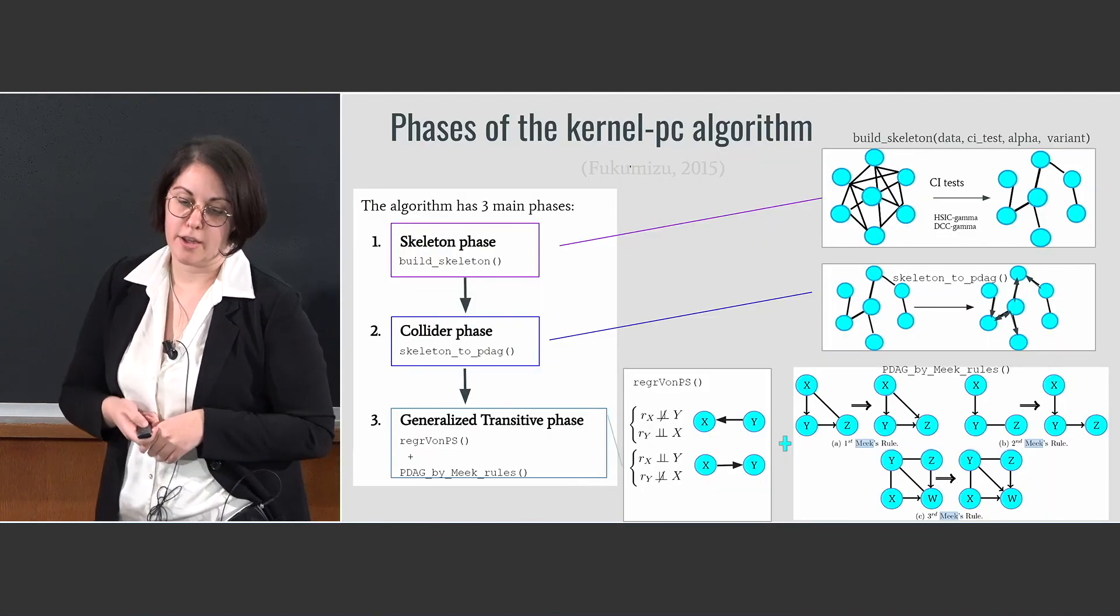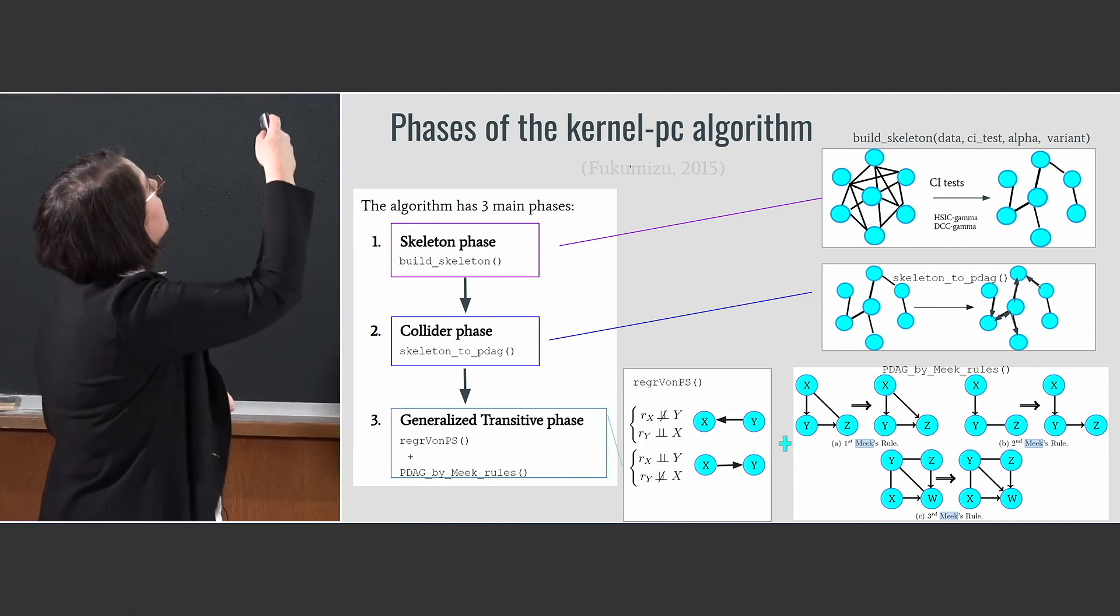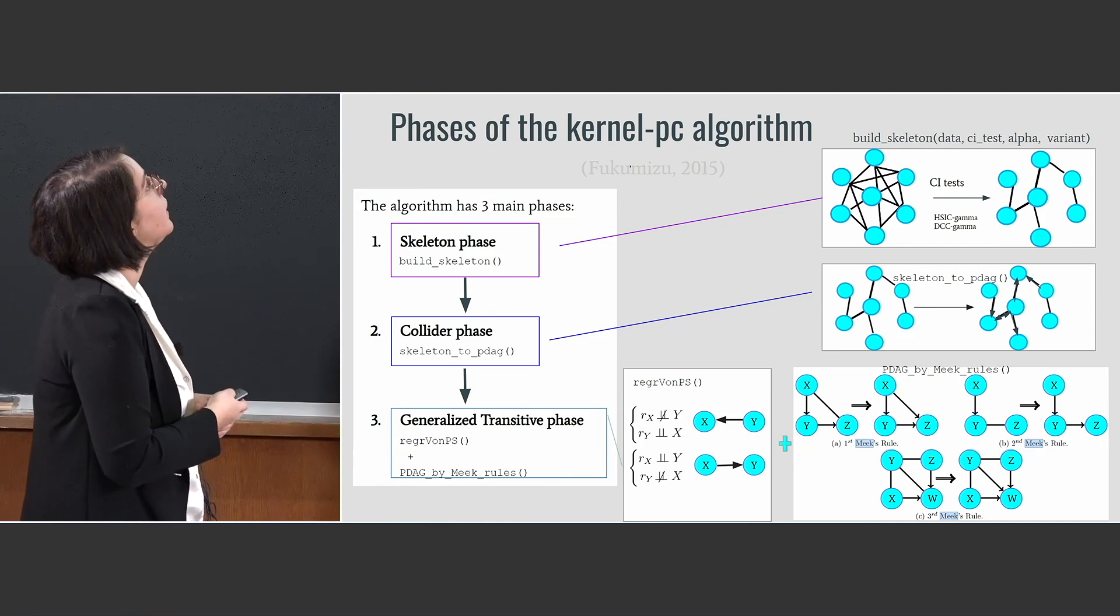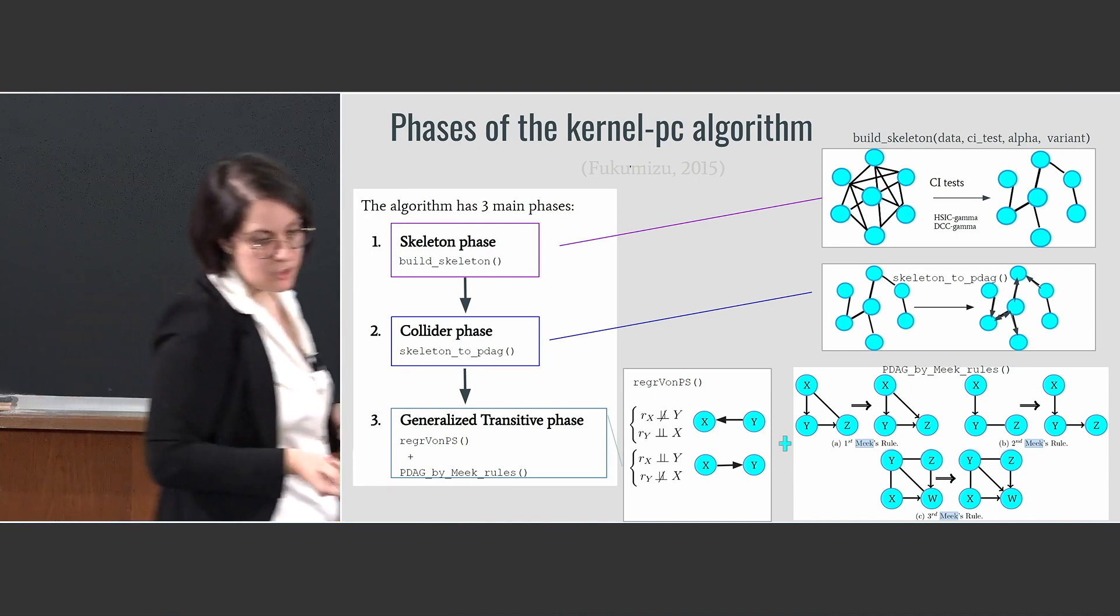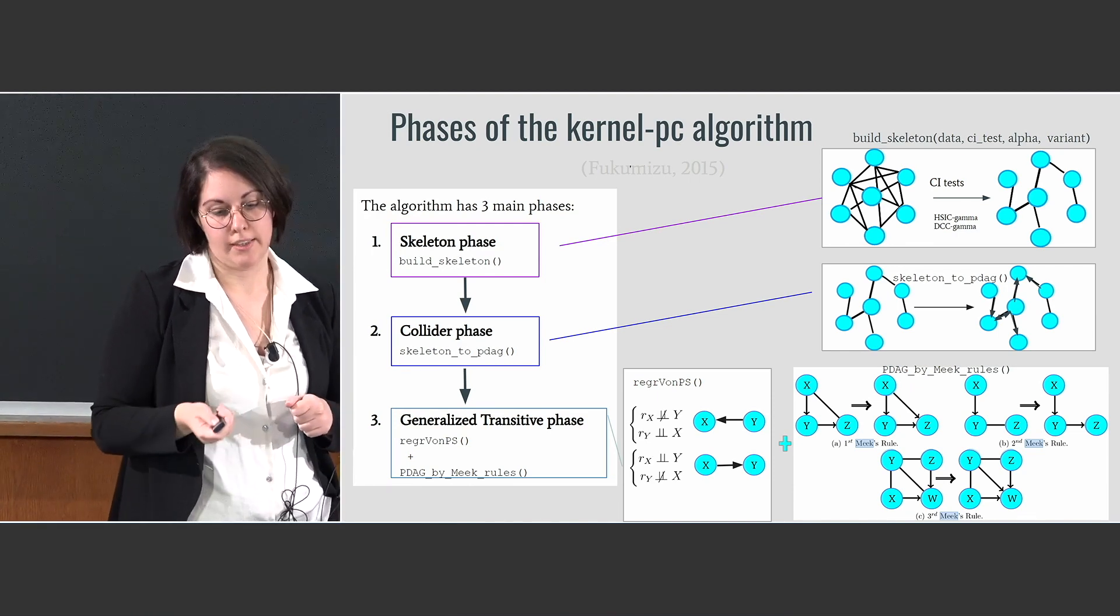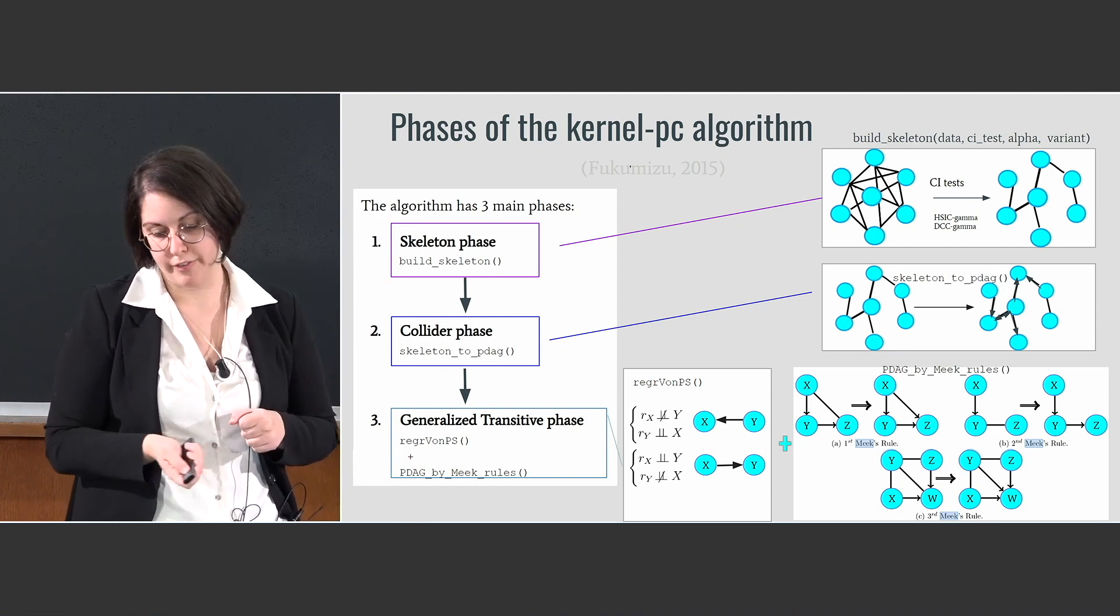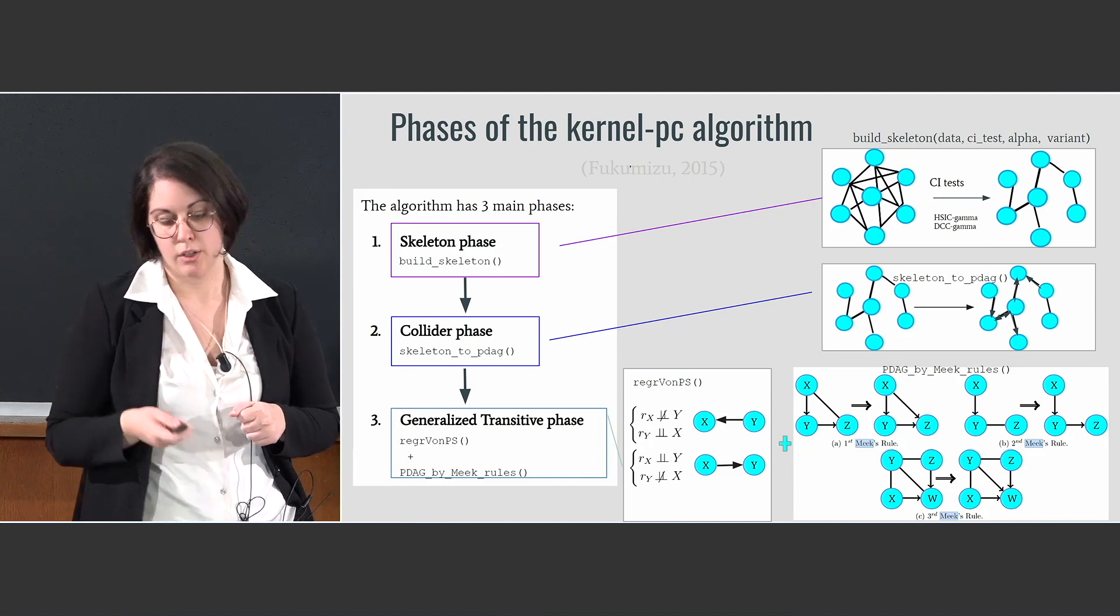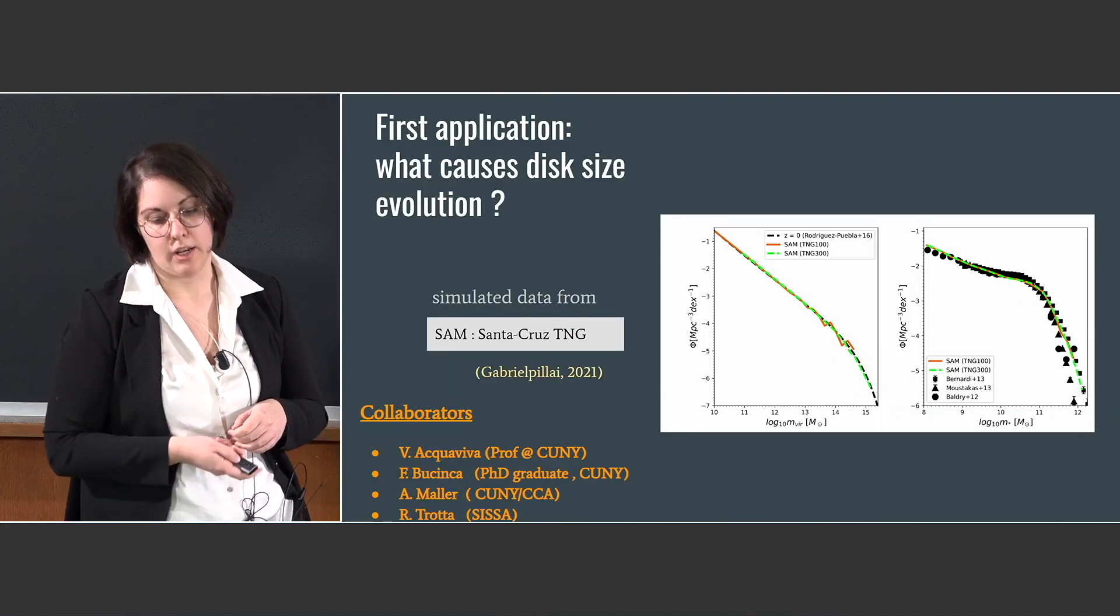And here I show the different phases of the algorithms that are three for all the main constraint-based algorithms. So first we constrain the skeleton, then the collider phase where we find the colliders, and then we have a generalized transitive phase where we apply MEC rules to orient the remaining edges.